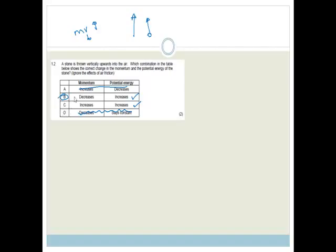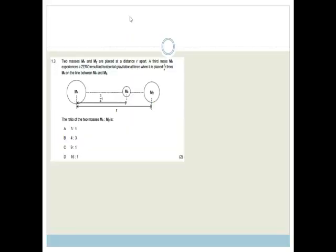So let's look at this now. Momentum is mass times velocity. The mass of the stone remains same. But what is happening to the velocity as it goes up? The velocity is decreasing. So therefore, our momentum is decreasing, and the correct answer is B.